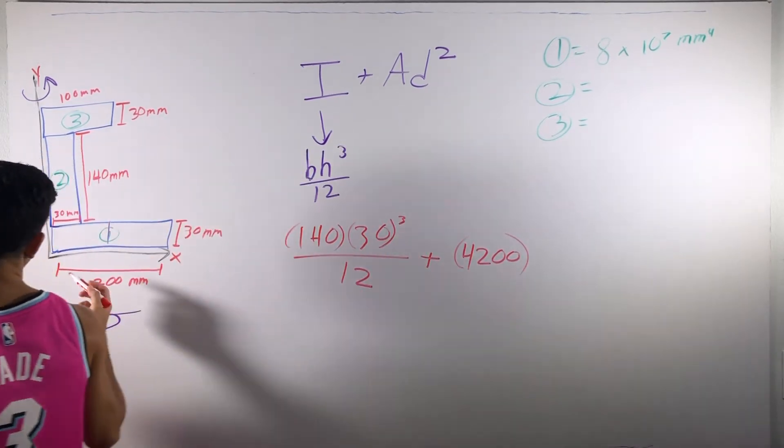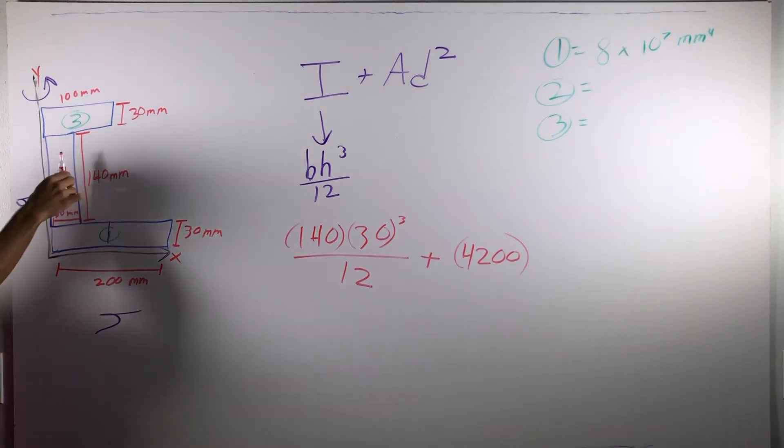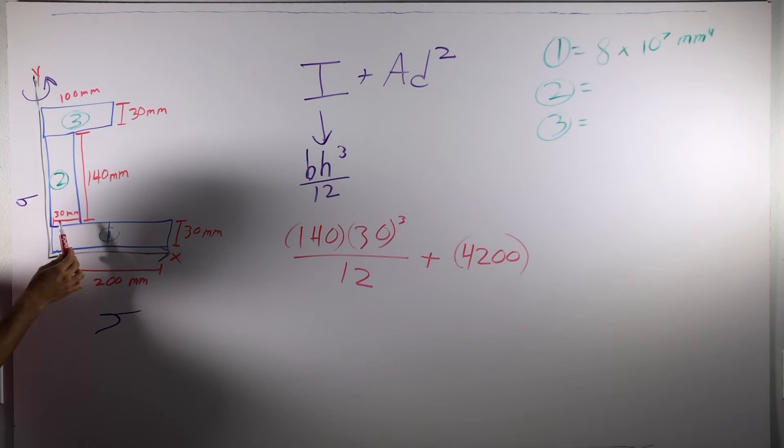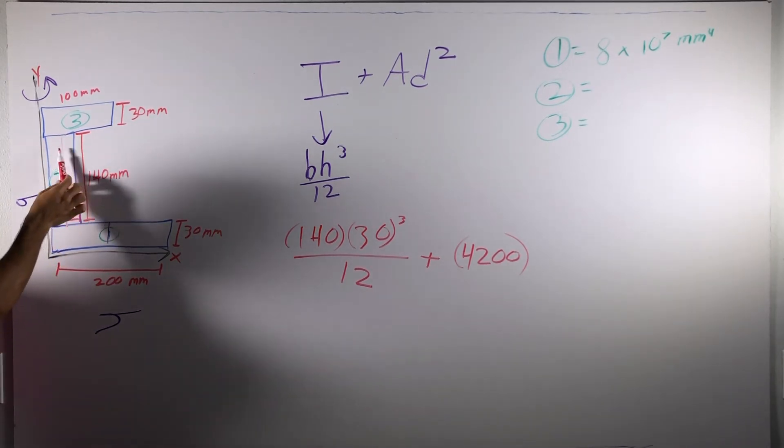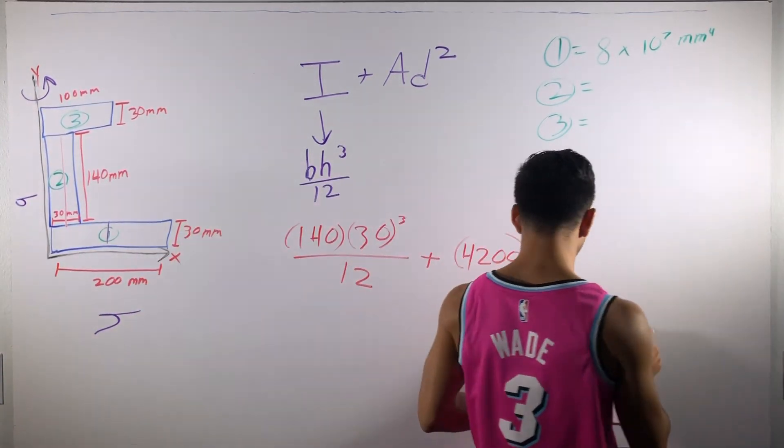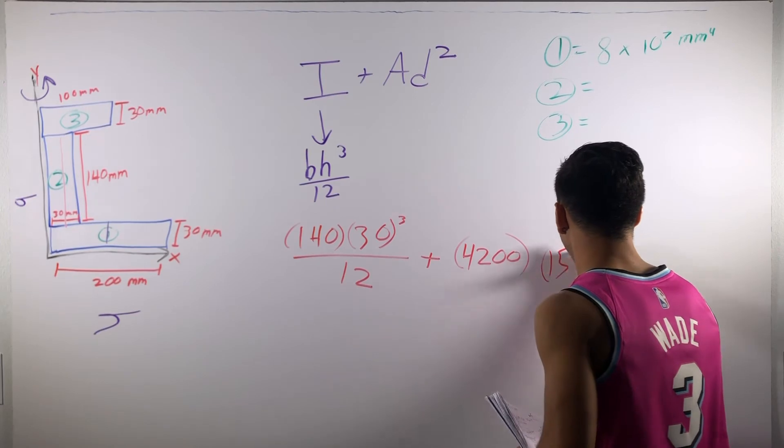And then our D is the centroid of two this way, right? So, it's 30. The height is 30. The height divided by two because it's a rectangle is right here. So, it's just 15 between the centroid of our section and whatever we're rotating about.